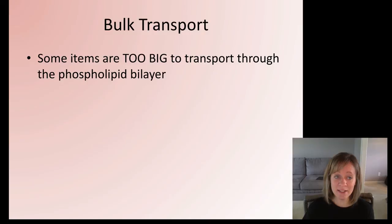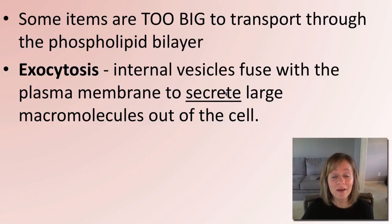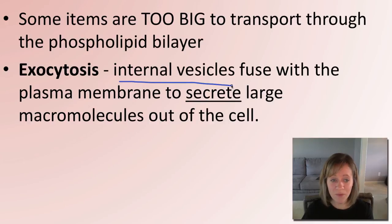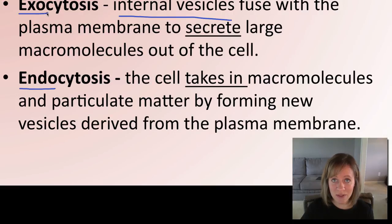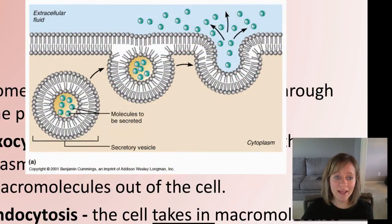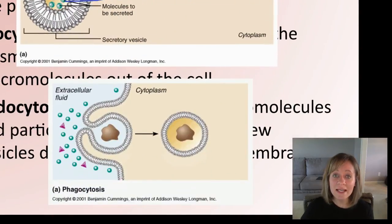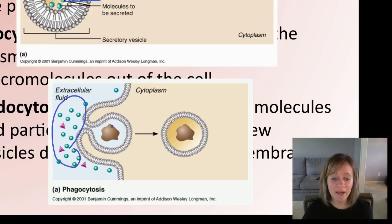There is one more type of transport. Some items are just way too big to transport through the phospholipid bilayer, even through a protein. This is called bulk transport. The first type is exocytosis — simply secretion, getting big molecules out. This happens by internal vesicles fusing with the plasma membrane and secreting contents outside the cell. Endocytosis is the opposite — 'endo' means within, 'exo' means without. In endocytosis, you take in large food or macromolecule matter by forming new vesicles derived from the plasma membrane. Exocytosis forms a vesicle that fuses with the membrane to release waste; endocytosis pinches in part of the membrane to create an internal vesicle.